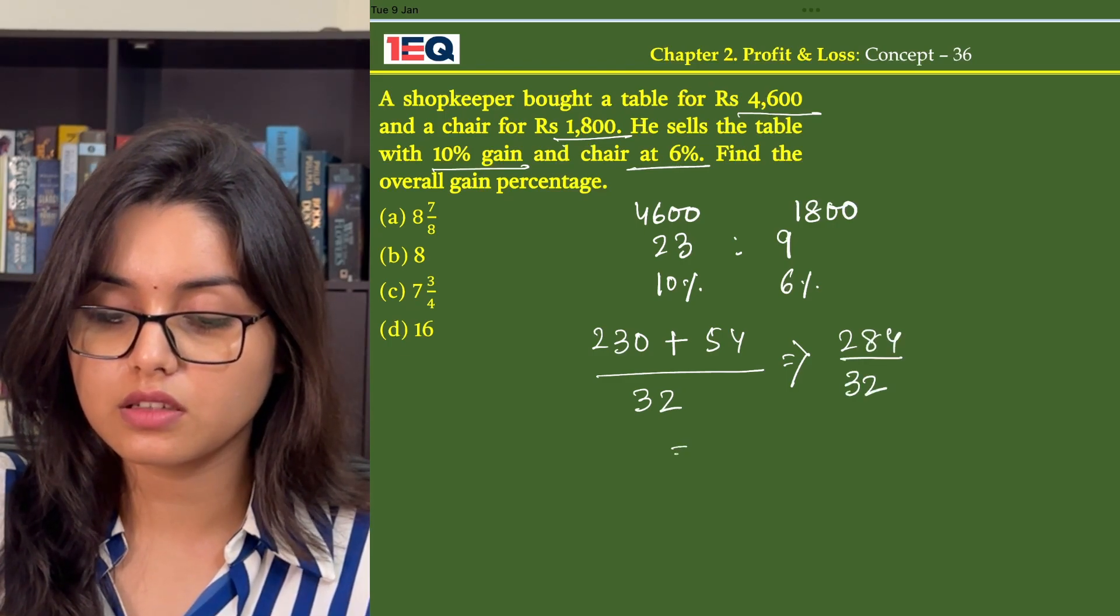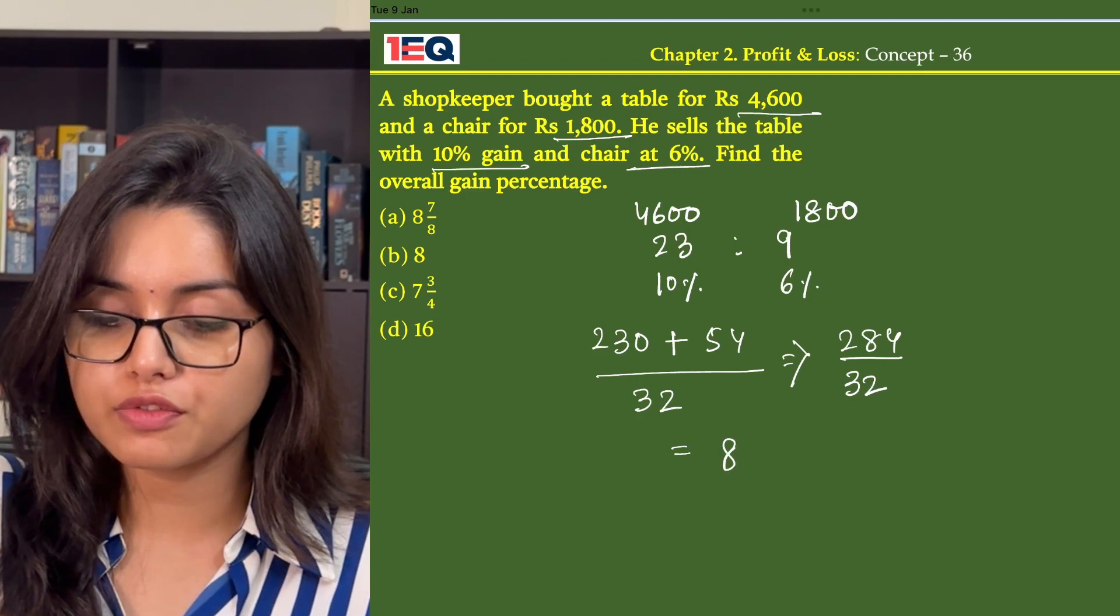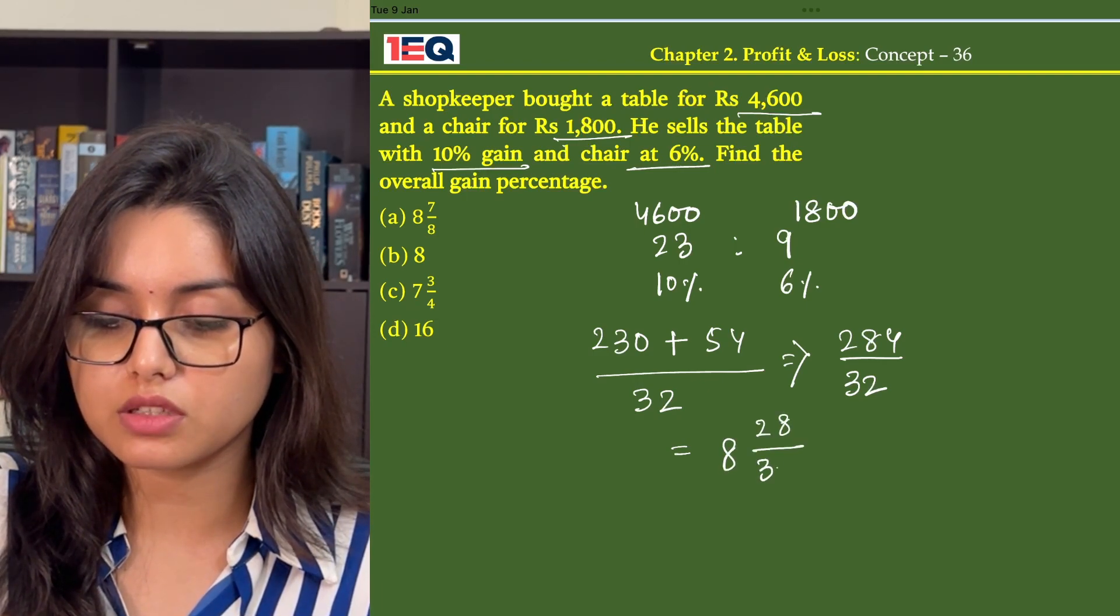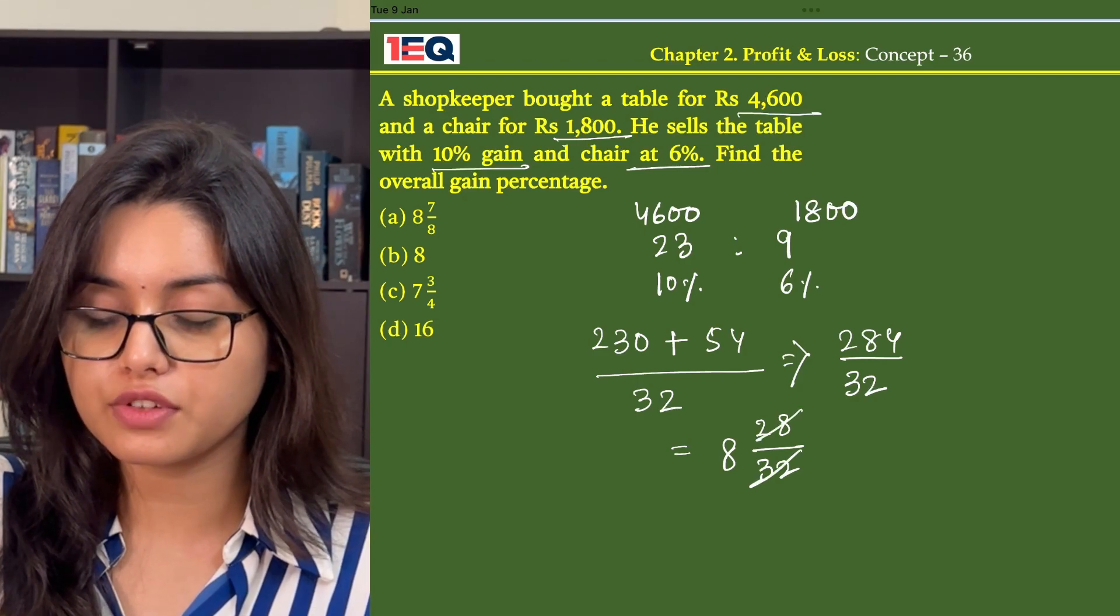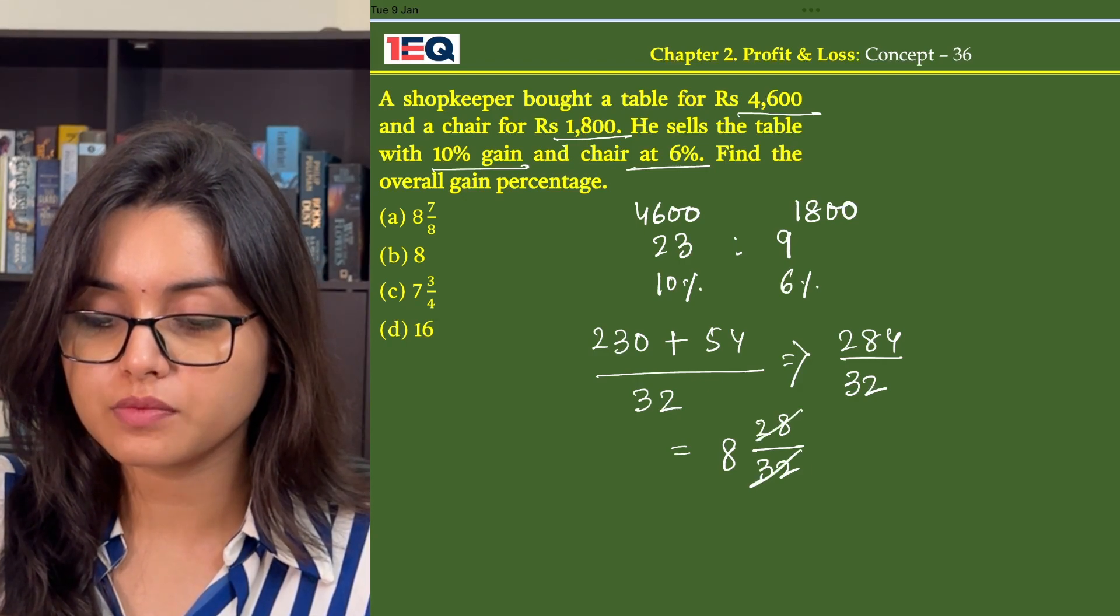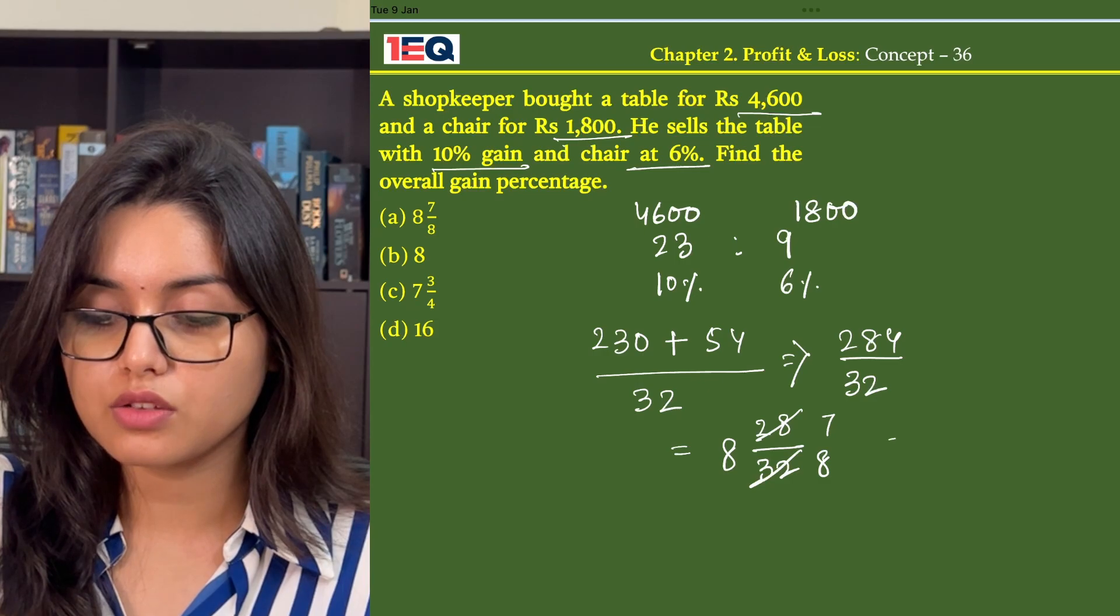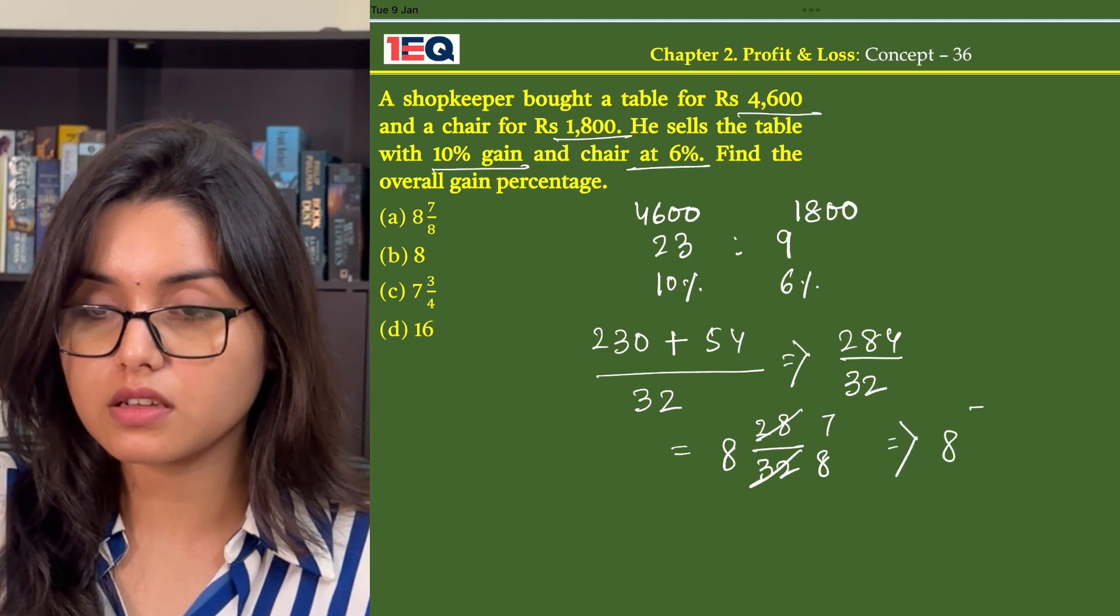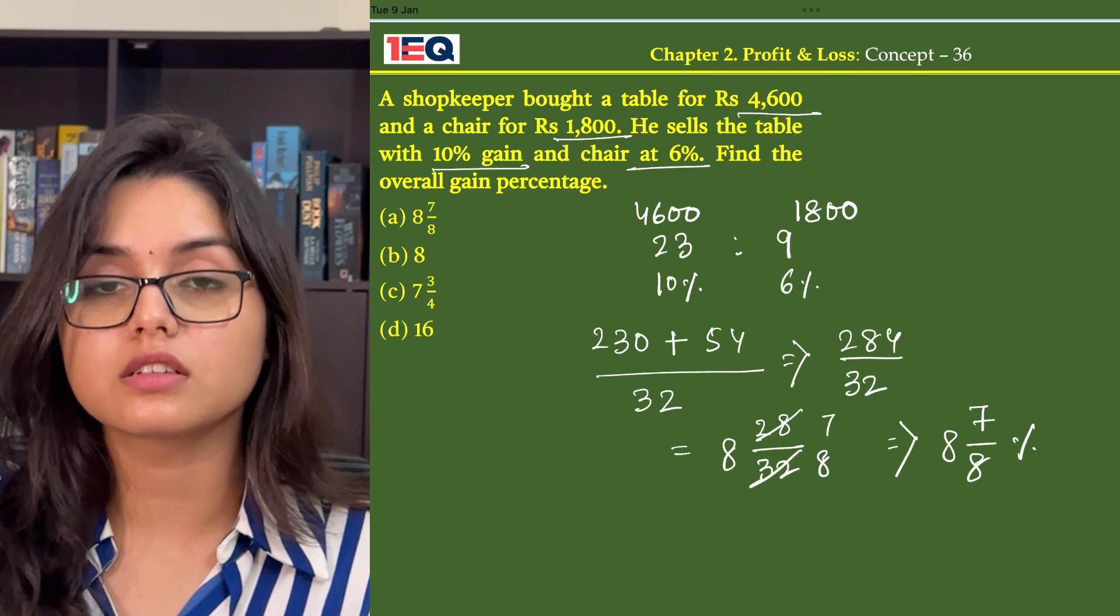That is 32 eights are 256. We are left with 28 by 32. On dividing this further with 4 we get 7 by 8. So our answer is 8 7/8%, that is option A.